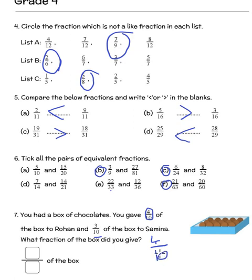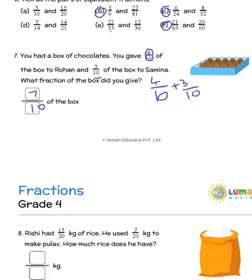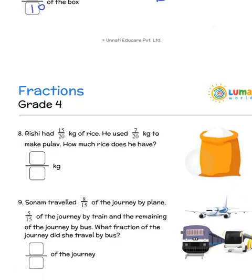Remember the denominators are same. So you just keep the denominator as 10 and add up the numerator and write it as denominator is 10. The numerator is 4 plus 3 is 7 by 10 of the boxes. So this is the answer.